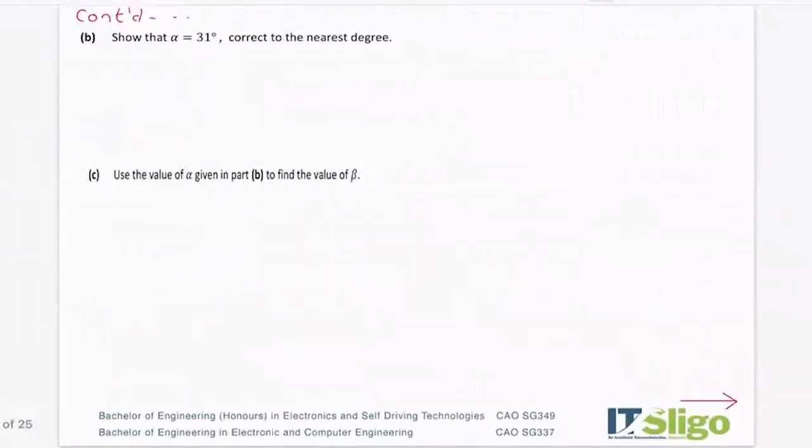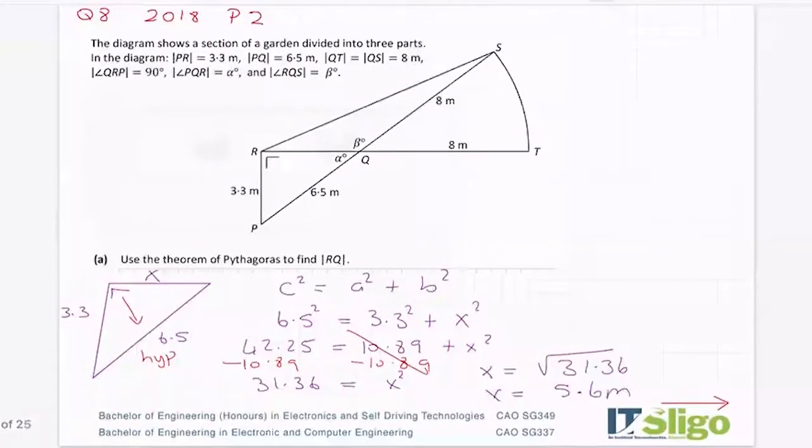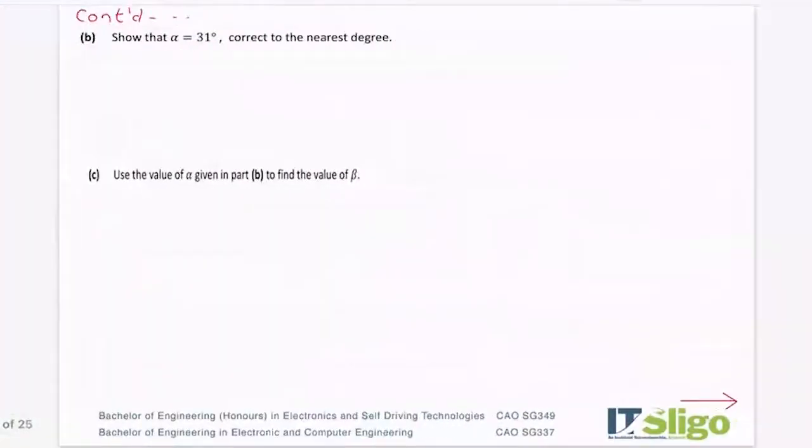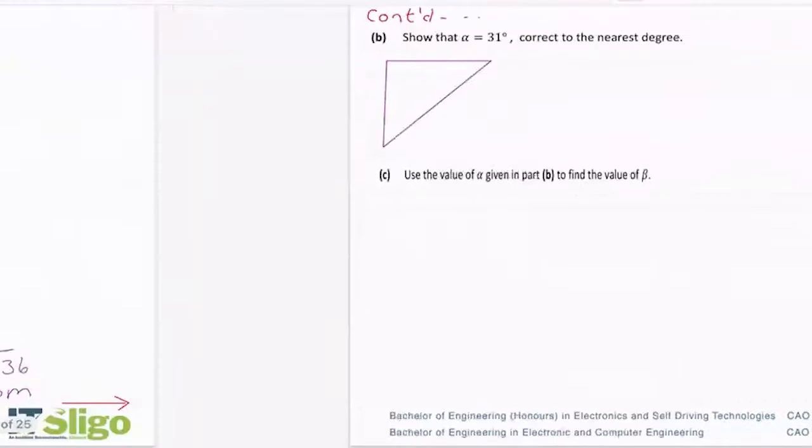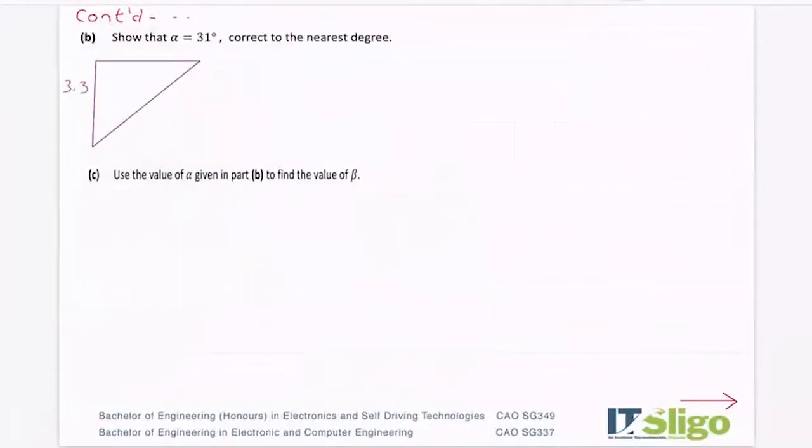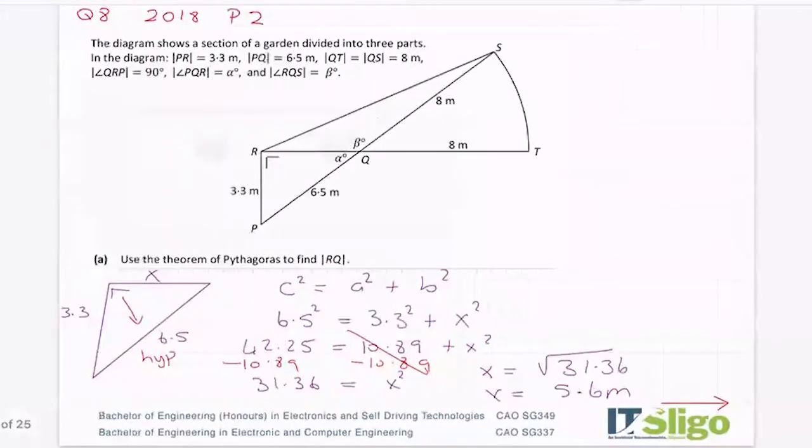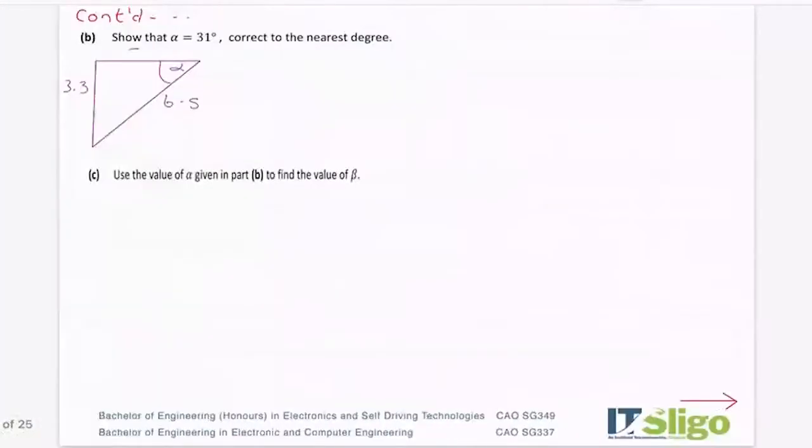Part B then said show that alpha is equal to 31 degrees. So again, let's draw the triangle. 3.3, 6.5, that's my alpha angle, and we've just worked out that he is 5.6. So right angle triangle again. I don't know where I'm putting them in as Fs, but right angle triangle again.